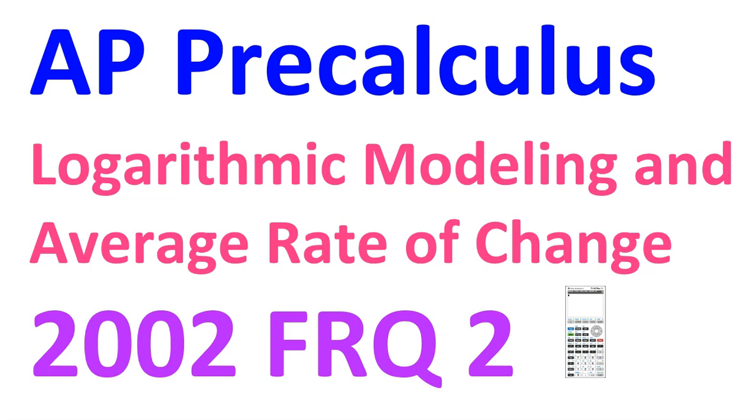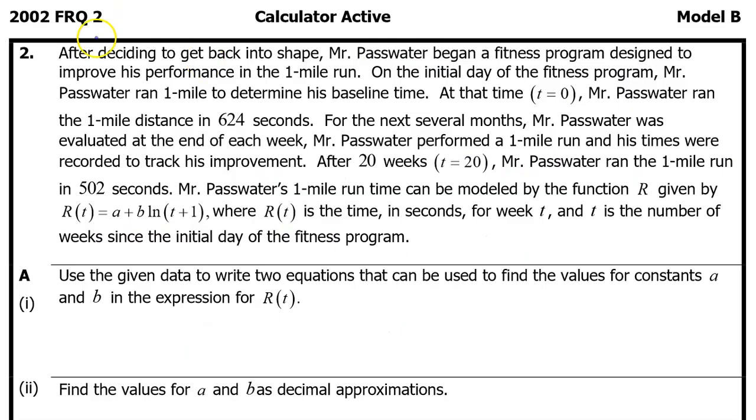If you appreciate the content, please give it a like. After deciding to get back into shape, Mr. Passwater began a fitness program designed to improve his performance in the one-mile run. On the initial day of the fitness program, Mr. Passwater ran one mile to determine his baseline time.